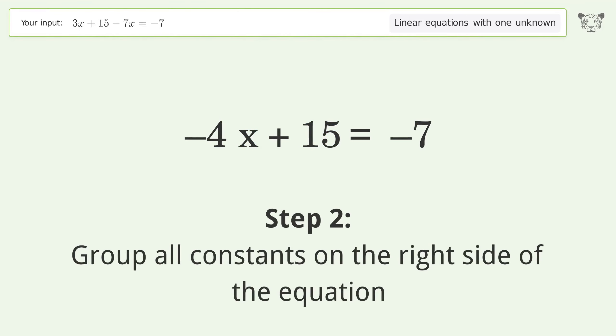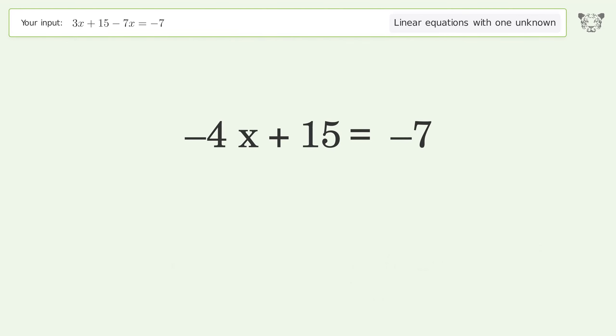Group all constants on the right side of the equation. Subtract 15 from both sides, then simplify the arithmetic.